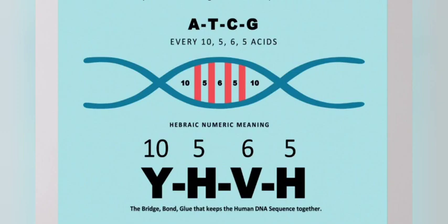At the base of our DNA, we have four main amino acids: A, T, C, G — adenine, thymine, cytosine, and guanine.